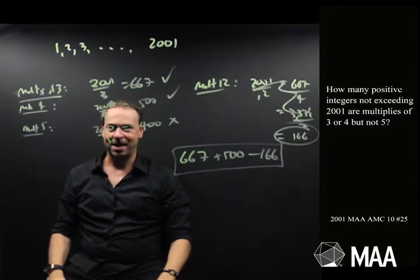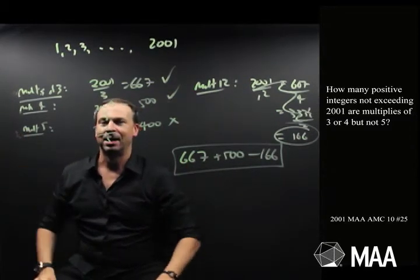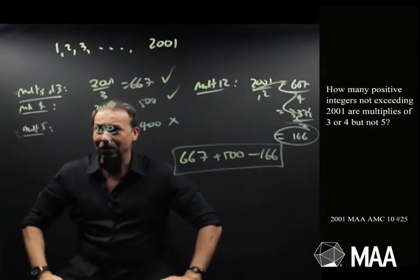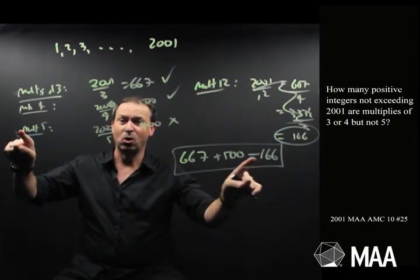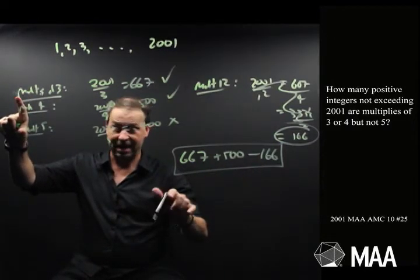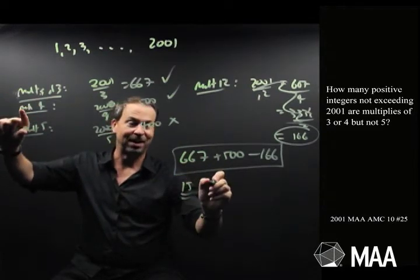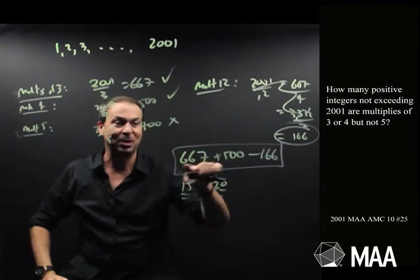Then, I want to subtract from that all the multiples of 5. I don't want multiples of 5 in this list. And I now think I need to be careful about that too, because in this list are all the multiples of 3 or 4. So I want to get rid of the multiples of 3 and 5, 15, get rid of those, and get rid of the multiples of 4 and 5, which is 20. Get rid of all the multiples of 15 and all the multiples of 20 from this list.